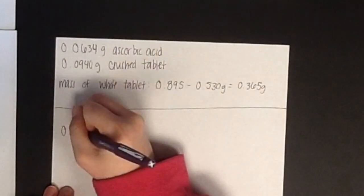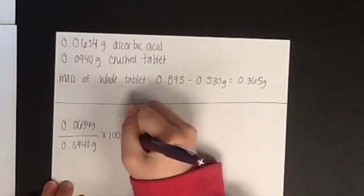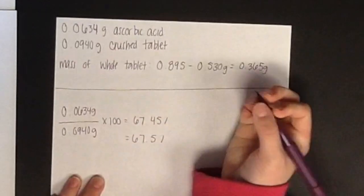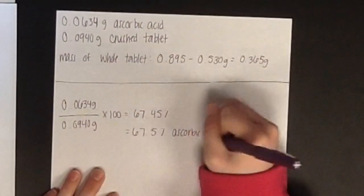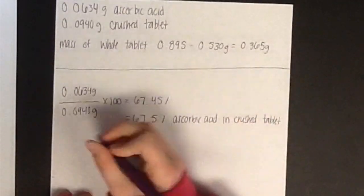Next, we will determine the amount of ascorbic acid in the crushed tablet. Divide the grams of ascorbic acid by the total grams of the powder and multiply by 100 to give a percentage value of 67.5 percent ascorbic acid in the crushed tablet.